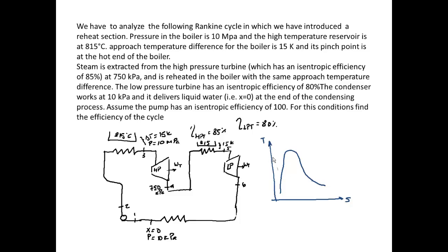If we draw this on a TS diagram, we have our boiler at 815, this will be 800. We have states 3, 4, 5, and 6. We have straight lines here, but remember that since we have isentropic efficiency, it's actually going to be something like this.